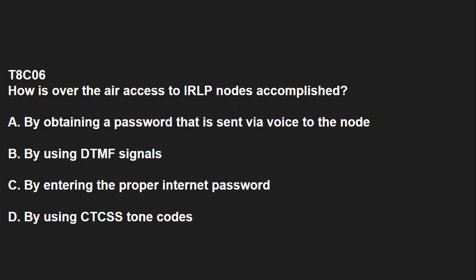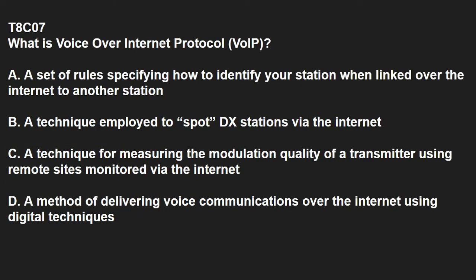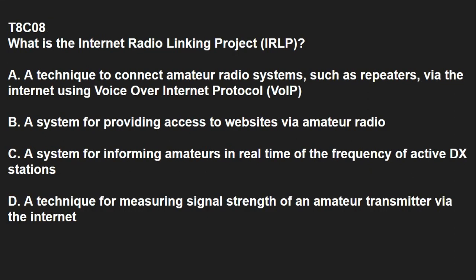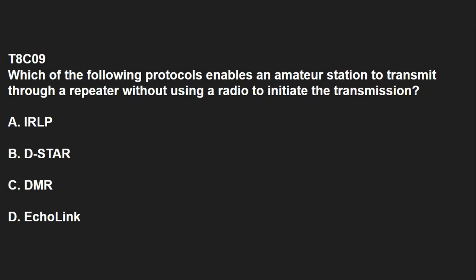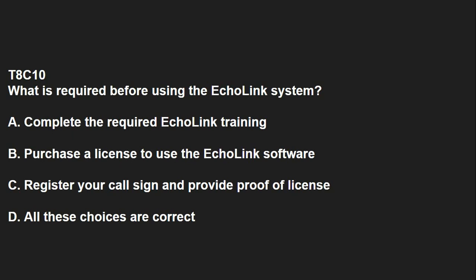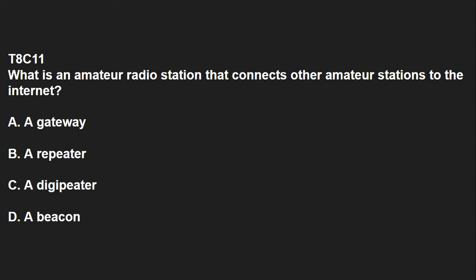T8C06: How is over-the-air access to IRLP nodes accomplished? By using DTMF signals. T8C07: What is voice over internet protocol, VoIP? A method of delivering voice communications over the internet using digital techniques. T8C08: What is the internet radio linking project, IRLP? A technique to connect amateur radio systems, such as repeaters, via the internet using voice over internet protocol. T8C09: Which of the following protocols enables an amateur station to transmit through a repeater without using a radio to initiate the transmission? That answer is D, Echolink. T8C10: What is required before using the Echolink system? You must register your call sign and provide proof of license. T8C11: What is an amateur radio station that connects other amateur stations to the internet? A gateway.